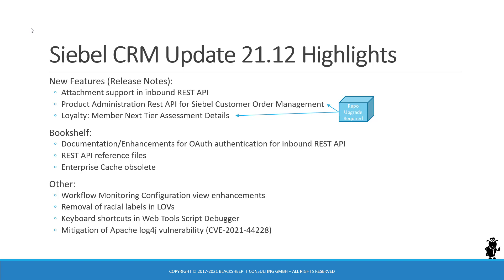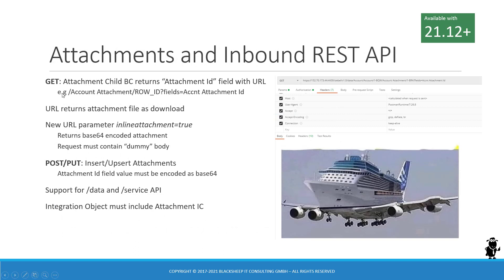As a result of the recent Log4Shell vulnerability, 21.12 includes the necessary mitigation of the Apache Log4j vulnerability, also known as CVE-2021-44228. So now let's get a little bit into more detail about these features.